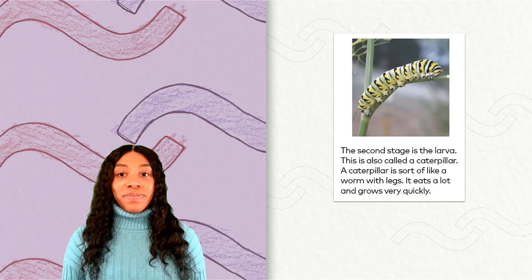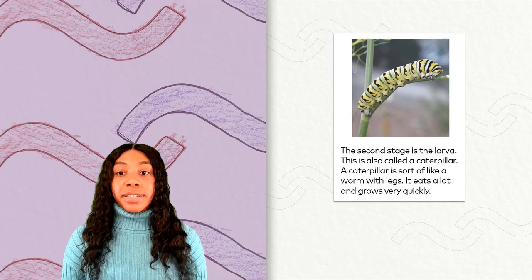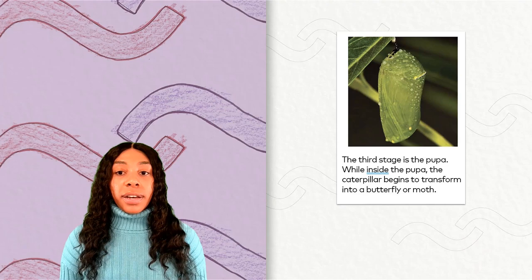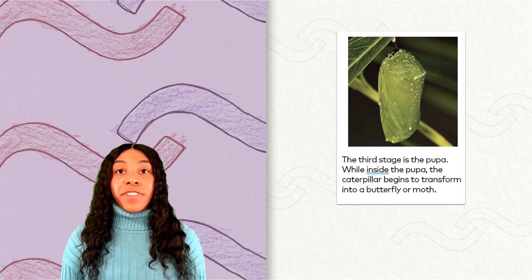The second stage is the larva, also called a caterpillar. A caterpillar is sort of like a worm with legs. It eats a lot and grows very quickly. The third stage is the pupa. While inside the pupa, the caterpillar begins to transform into a butterfly or moth. We have one high frequency word: inside.